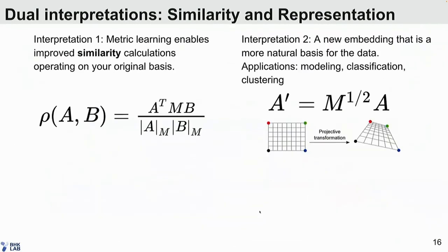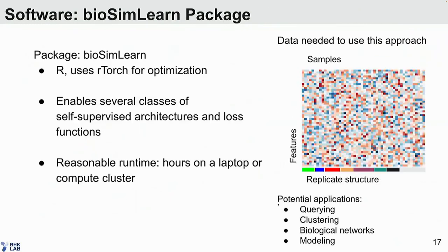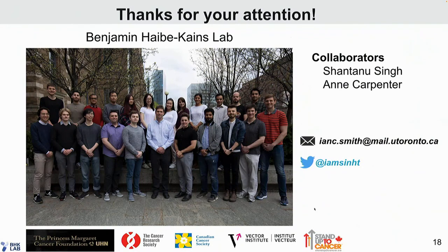To recap, there are two interpretations of this method: first, an improved similarity calculation that's able to better recover known biology and presumably discover novel biology; and second, an embedding in a new space that may be more appropriate for applications like clustering or modeling — a more natural basis for the data. We're in the process of submitting a package to Bioconductor called BioSimLearn to enable researchers to apply this method to learn similarity functions specific to their data sets. All you need is a data matrix with known replicate structures as ground truth to train the model. Please reach out if you have data sets you'd be interested in applying this to. Thank you.